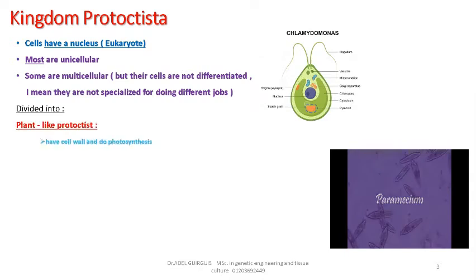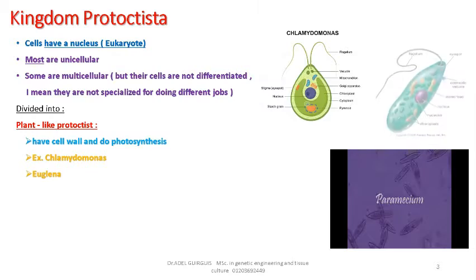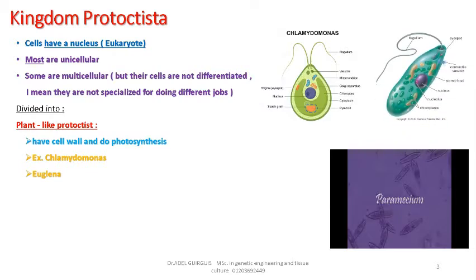Plant-like protists have a cell wall and do photosynthesis. Examples include Chlamydomonas and Euglena.